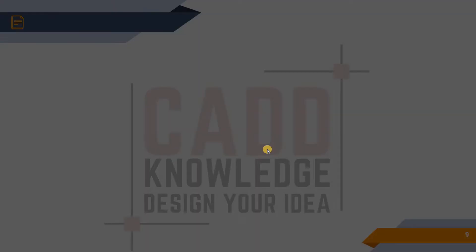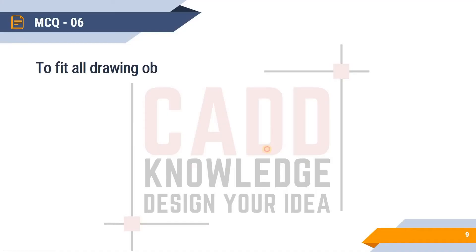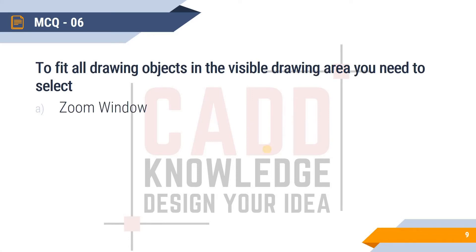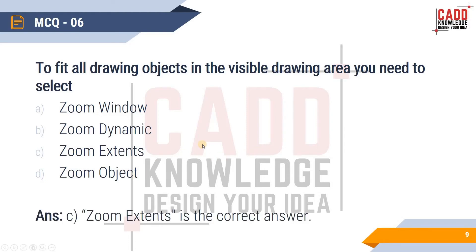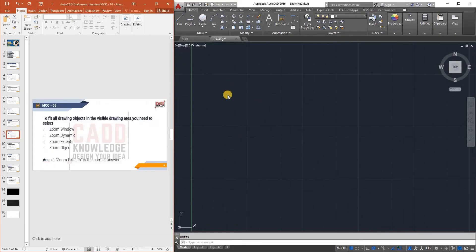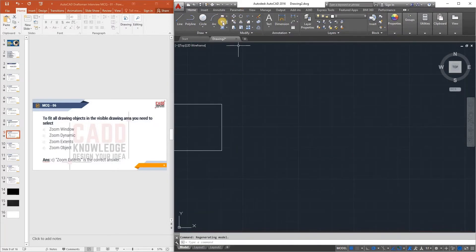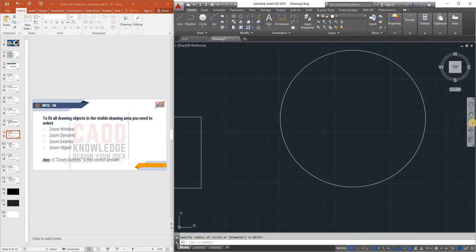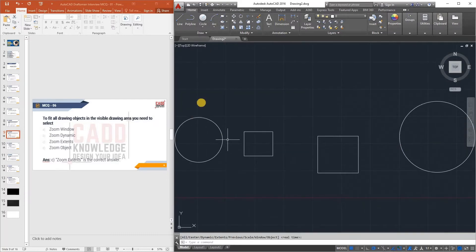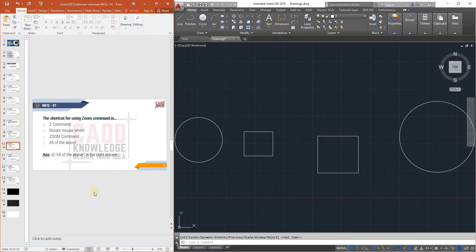MCQ 6: To fit all drawing objects in the visible drawing area, you need to select Zoom Window, Zoom Dynamic, Zoom Extents, or Zoom Object. The answer is Zoom Extents. If you draw anything and want to see it all in the window, click Zoom Extents and everything will fit in the view.